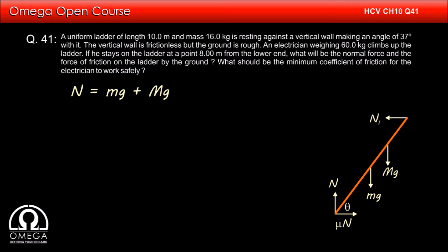Balancing the forces in vertical direction, we get N equals mg plus Mg, that is (m + M)g. Putting the values of both the masses, this becomes 76g. Putting g equals 9.8 meters per second squared,